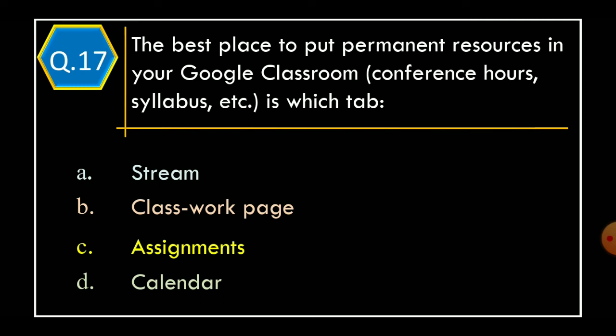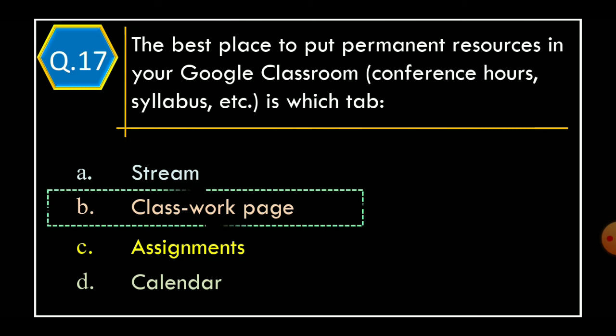Question 17: The best place to put permanent resources in your Google Classroom — conference hours, syllabus, etc. — in which tab? Option A: Stream, Option B: Class Work Page, Option C: Assignments, Option D: Calendar. And correct option is Option B: Class Work Page.